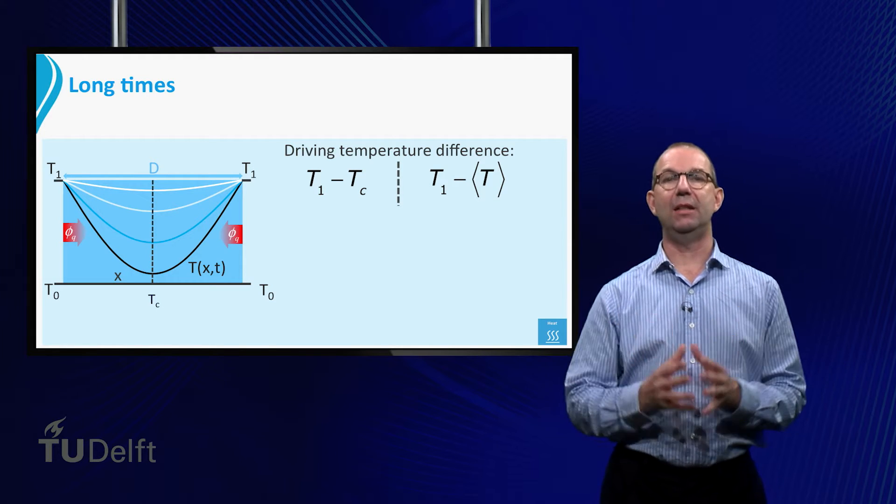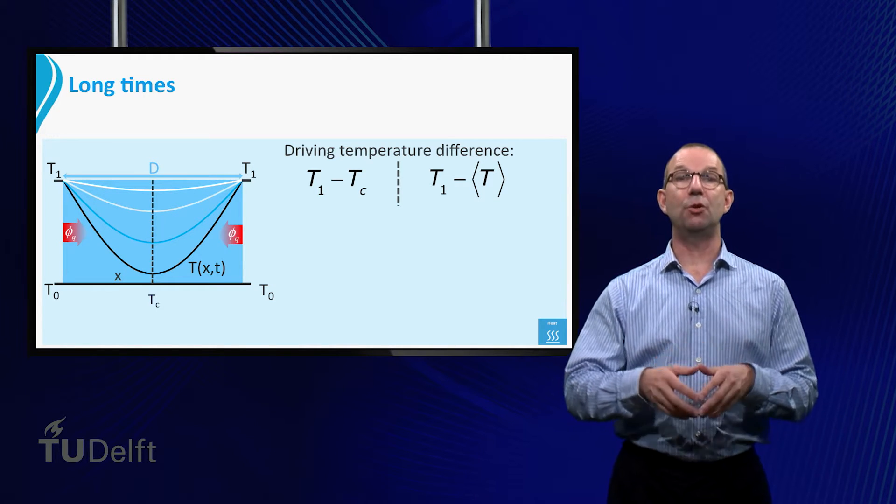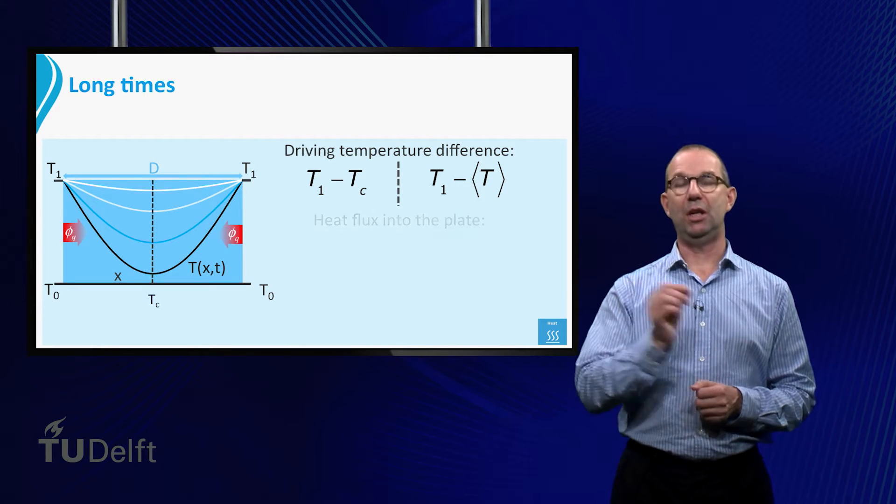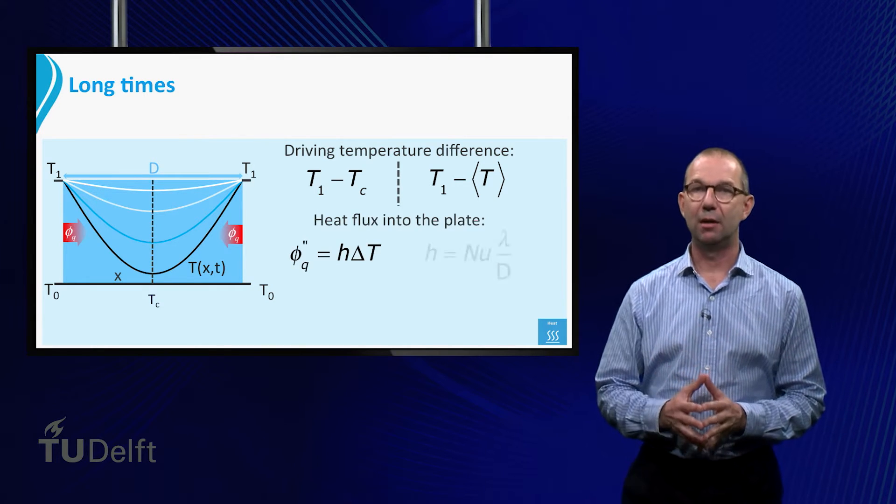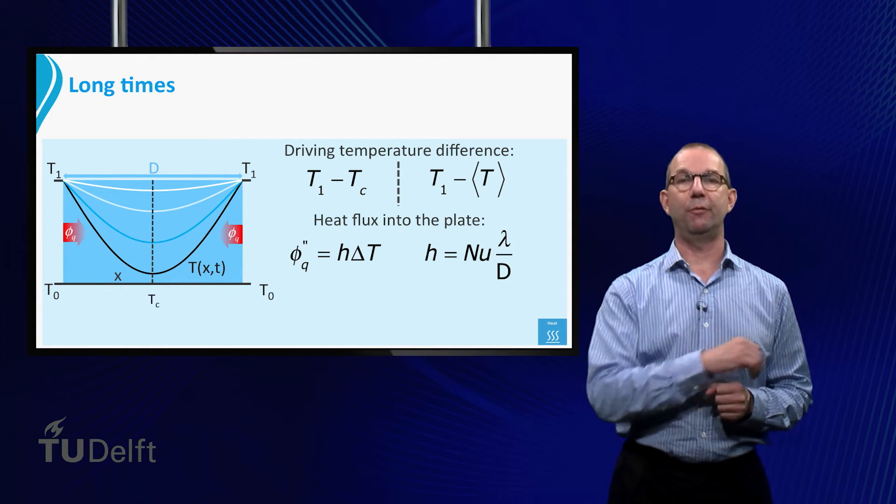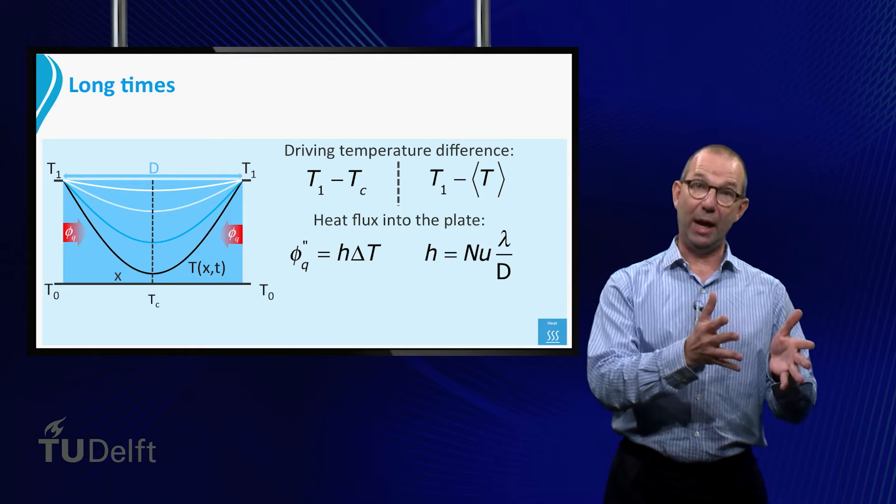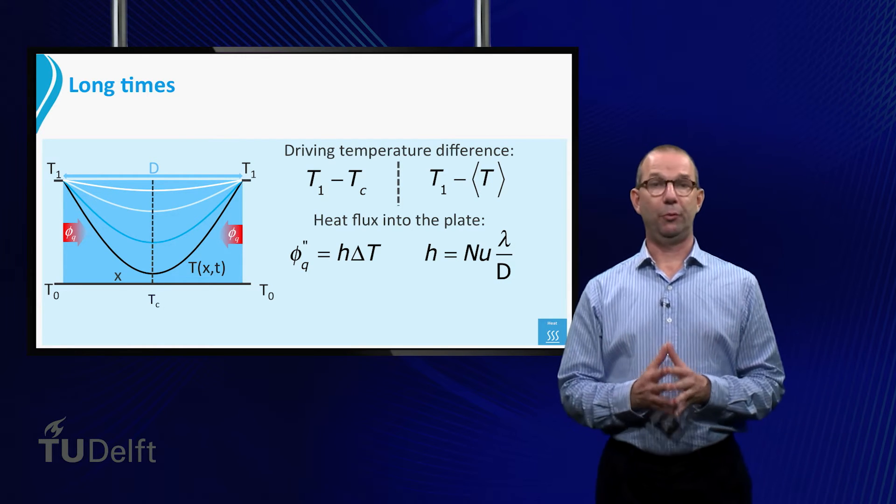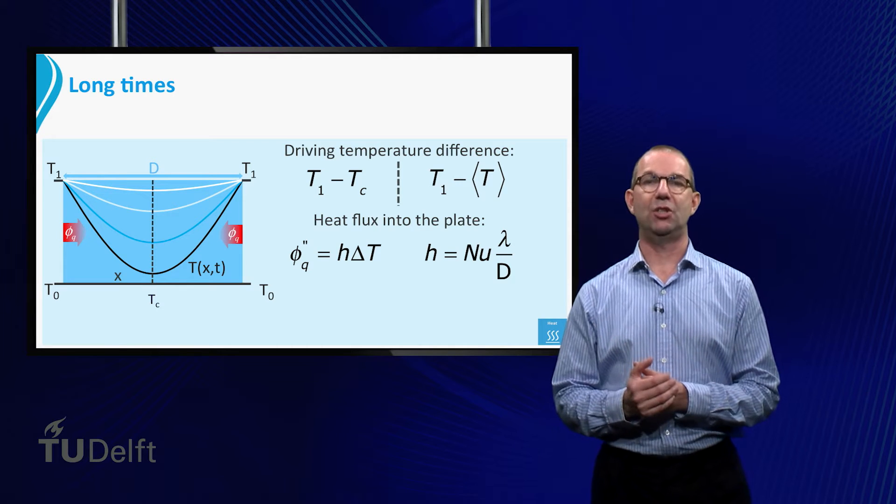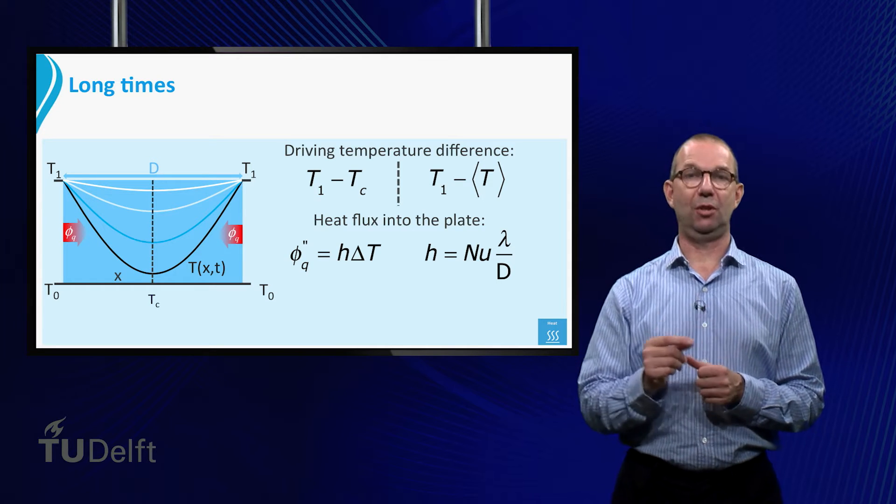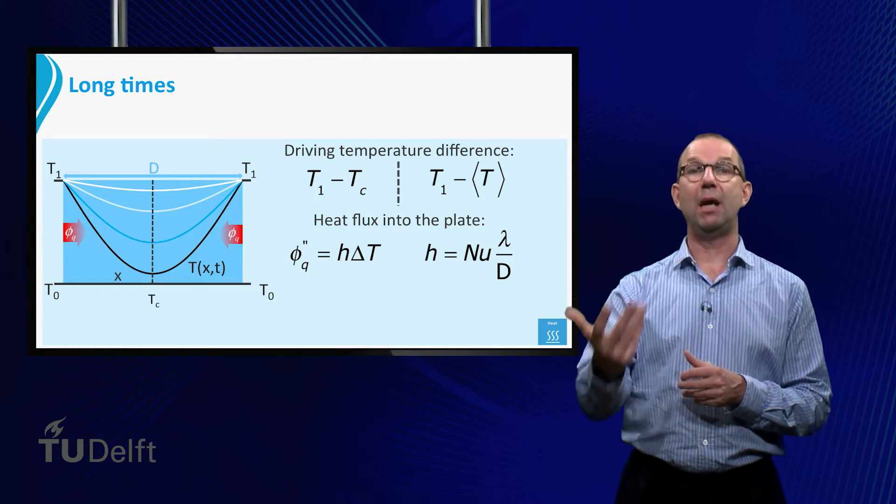We model the heat flux in the usual way. Phi sub Q double dash is H times the driving force. Once we know H, we can compute fluxes. As always, we prefer to give Nusselt instead of H, as it is more universal. We find H by multiplying Nusselt by lambda and dividing it by D.